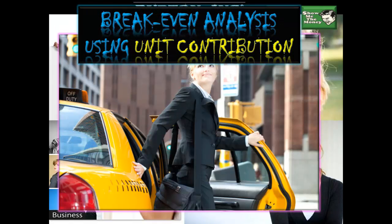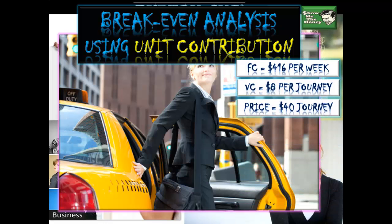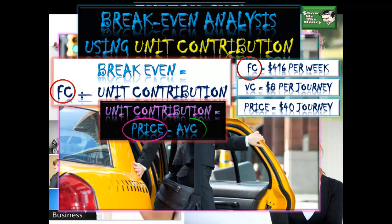So the taxi company — I'm going to use unit contribution. It's the simplest one to do. You're just plugging numbers into your calculator, and you do have to know what unit contribution is. You can't go into the business and management exam without knowing this. We've got our three pieces of information. Unit contribution: fixed cost divided by unit contribution. Price $40 less our variable costs. Unit contribution $32.